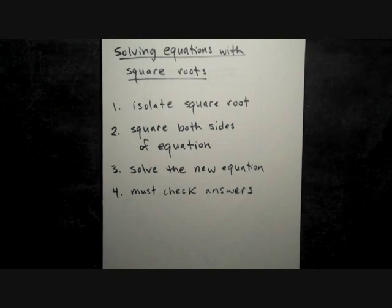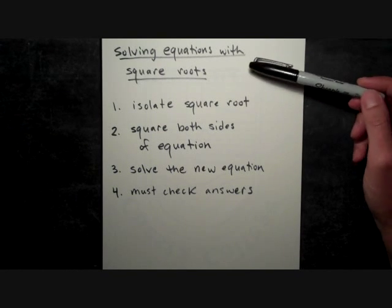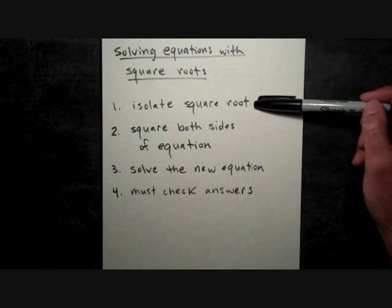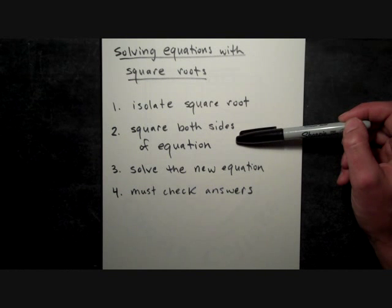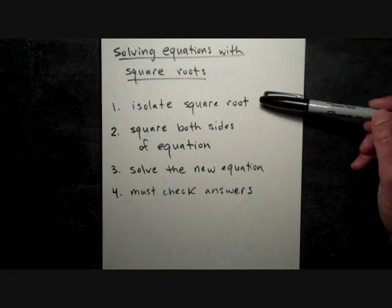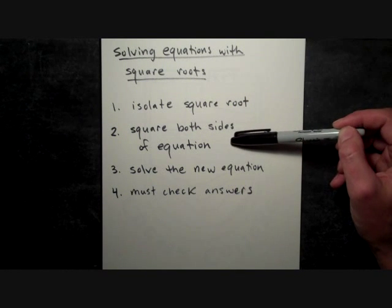Just to review what we did when we had a square root in the equation: we would isolate the square root first, always. Then we square both sides of the equation, and when you have that square root isolated from the first step, squaring it will eliminate the square root.